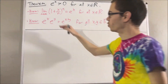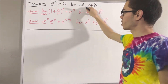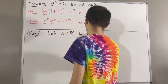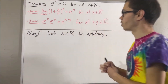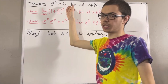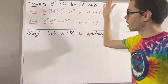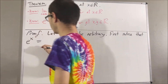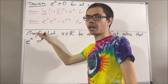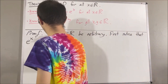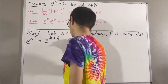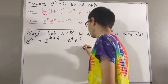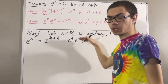So now let's get into proving this theorem. Starting with the proof, let's give ourselves an arbitrary real number x. We want to show that e to the x is greater than zero. The first thing to notice is that we can re-express x as x over 2 plus x over 2. By our preliminary result, e to the x equals e to the x over 2 times e to the x over 2.